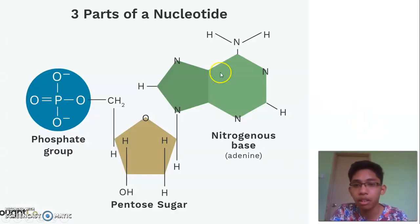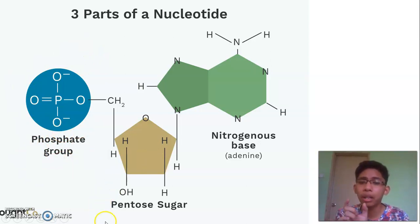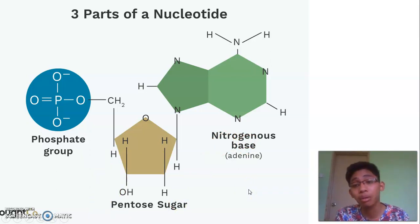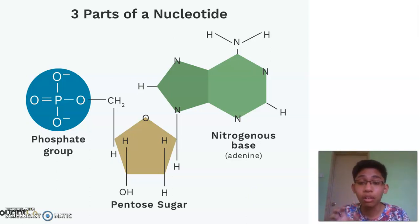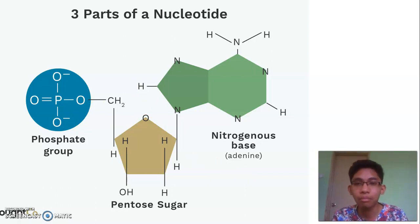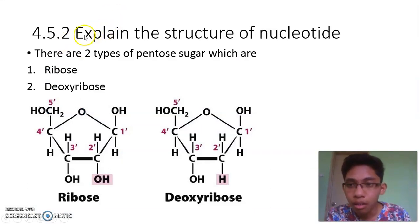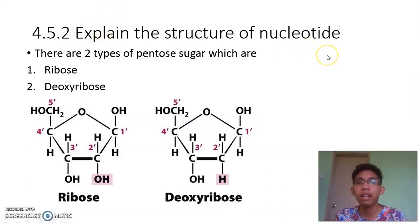The three parts of nucleotide are phosphate group, pentose sugar, and nitrogenous base. The phosphate group is fixed — there is only one type. But for pentose sugar and nitrogenous base, there are many types. I will explain later what the types of nitrogenous bases are and also the two types of pentose sugar.